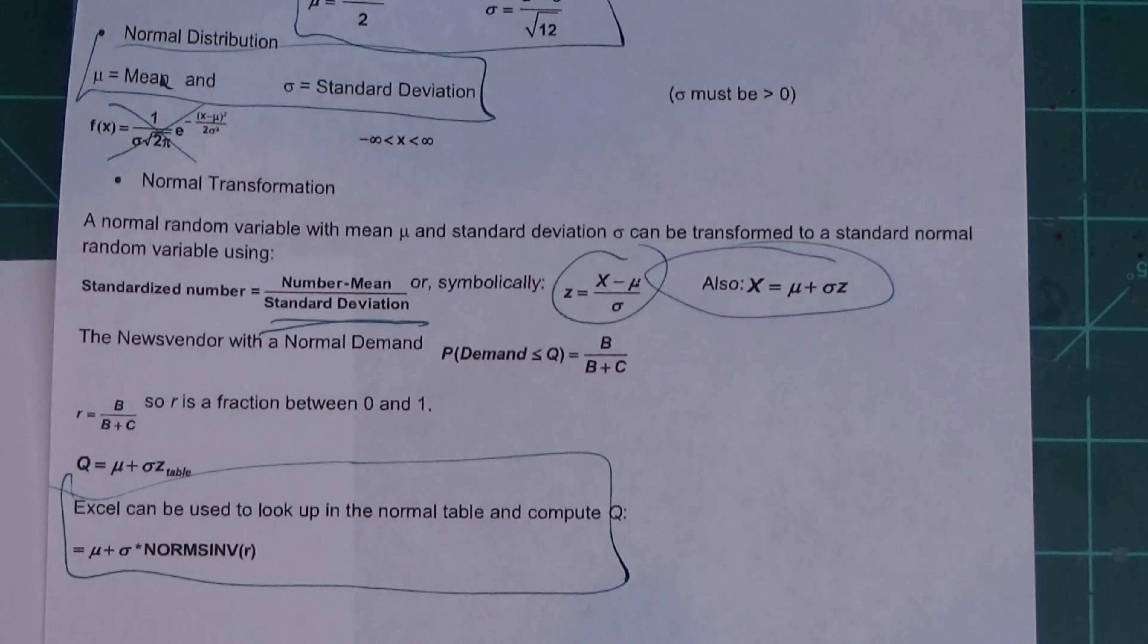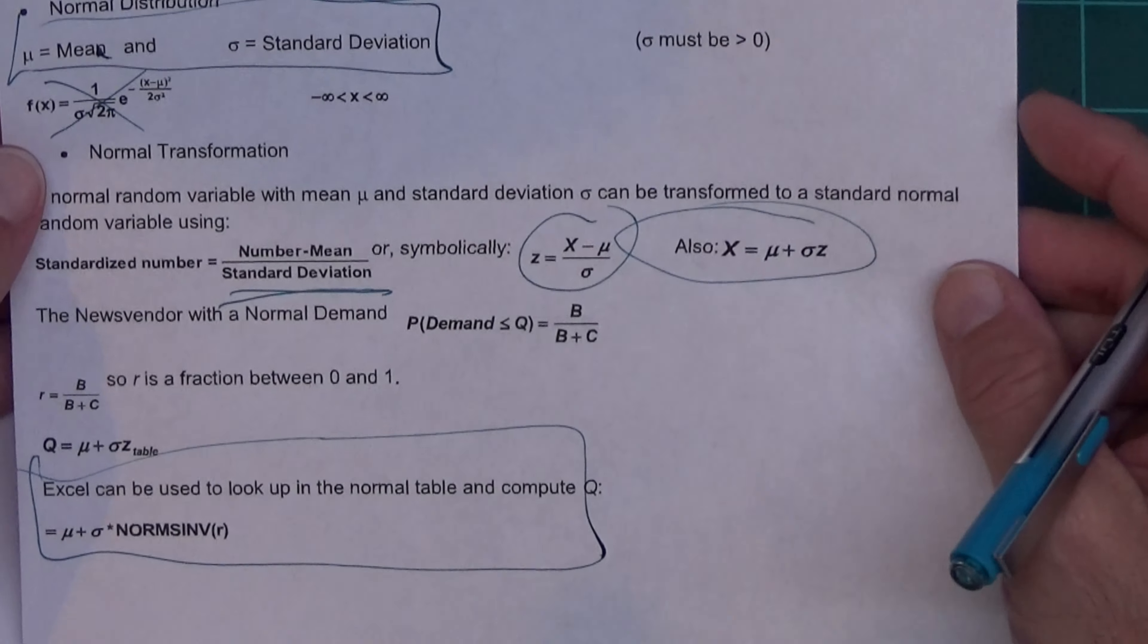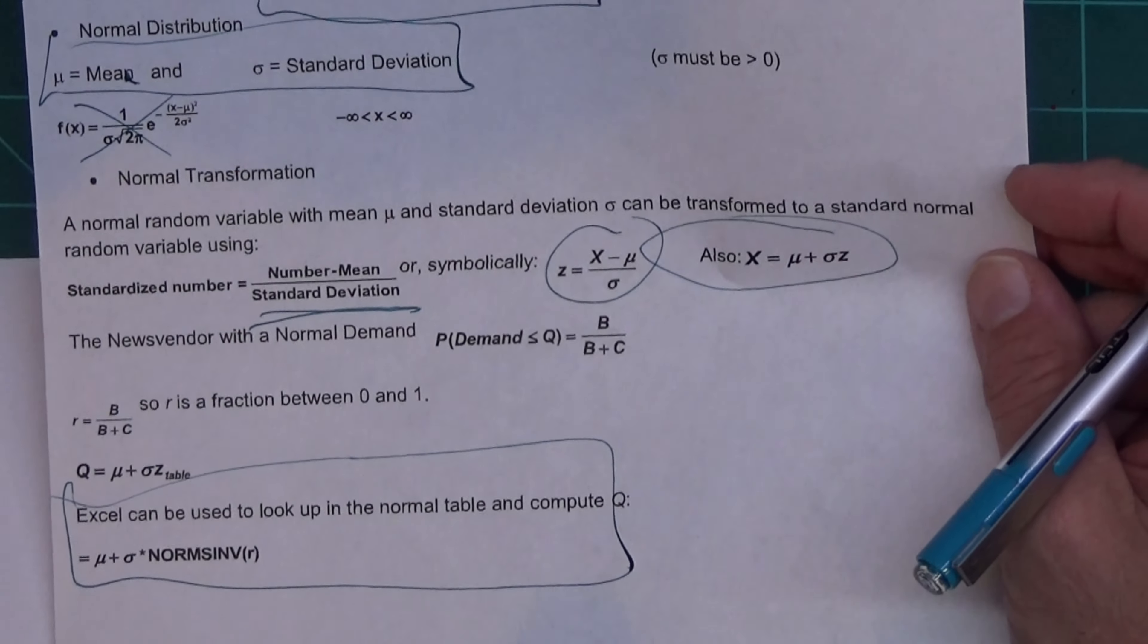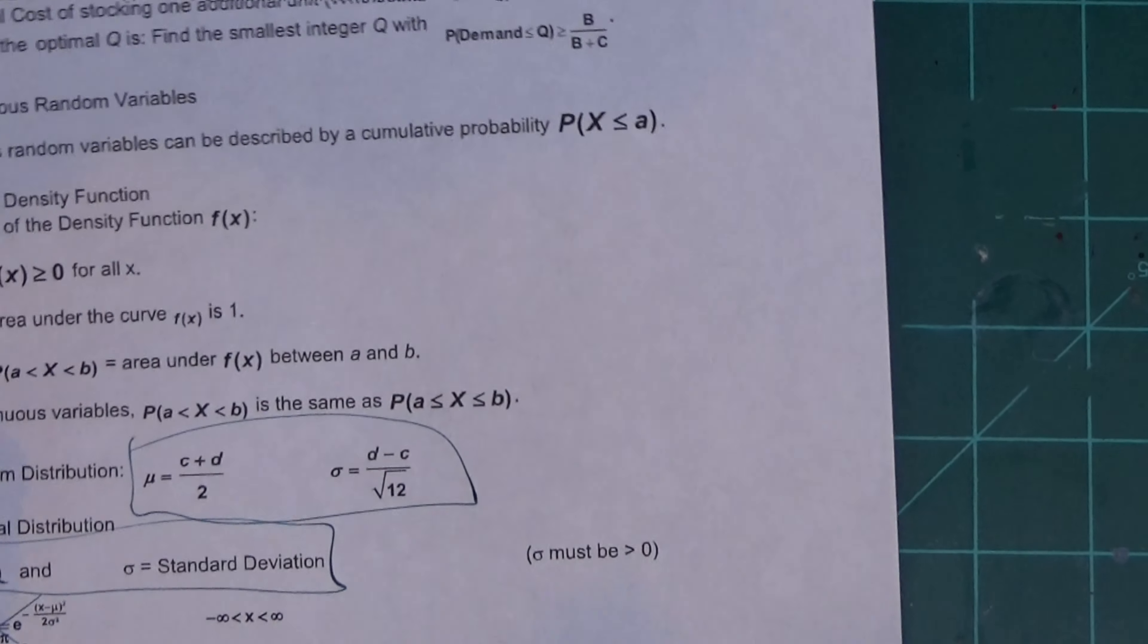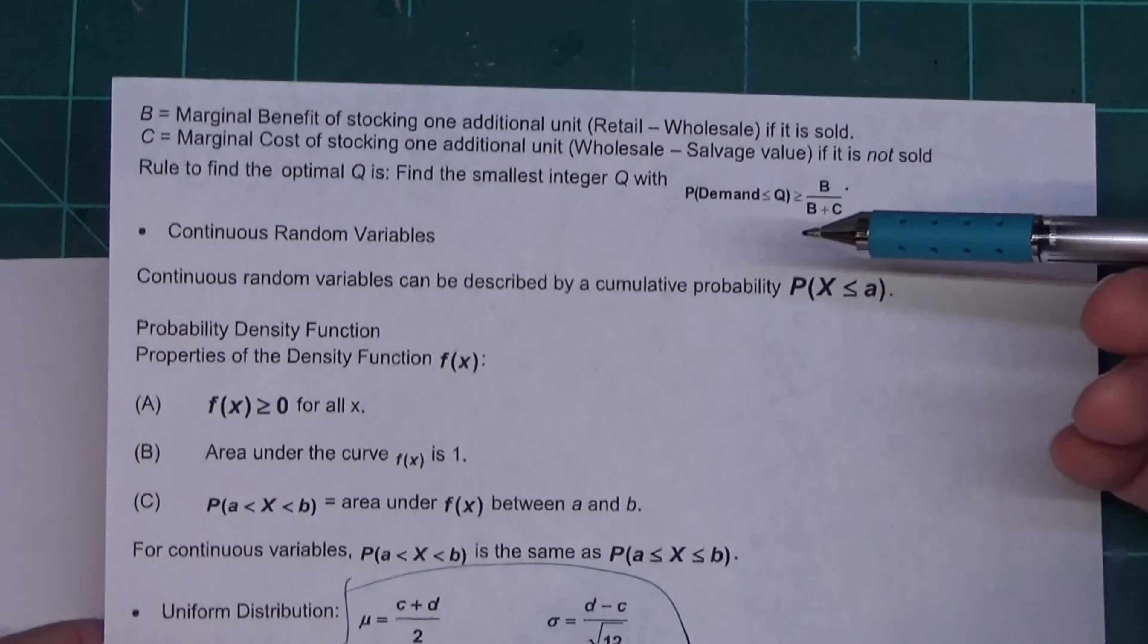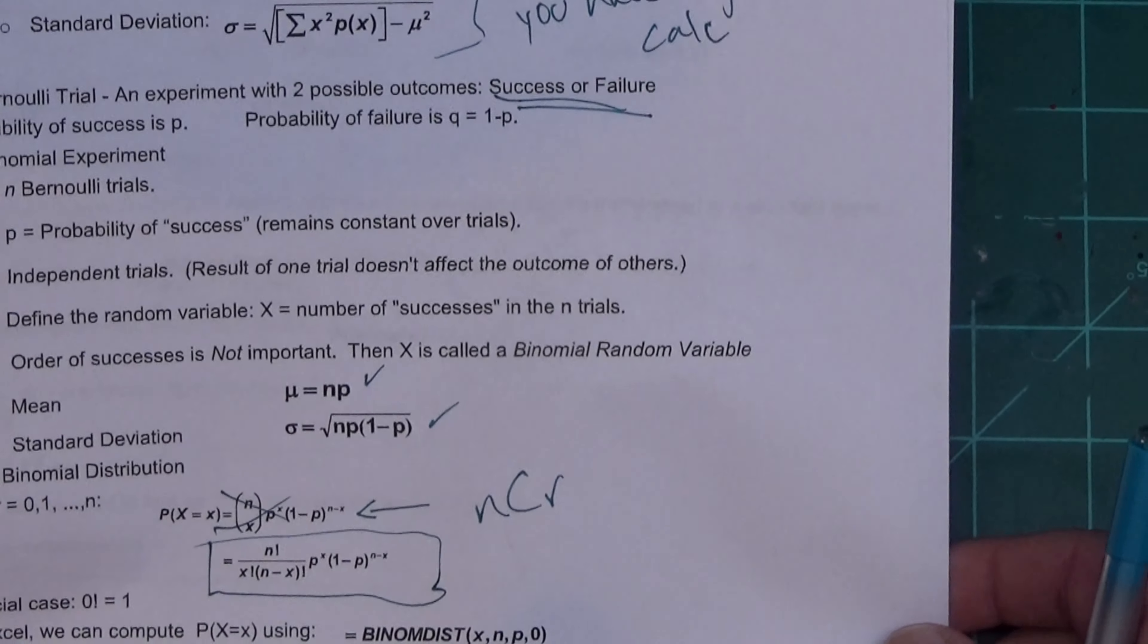So that's what's going on organization-wise. She could have organized this a little better. She could have put the news vendor problem all together in one spot instead of splitting it. What she's trying to say is up here it's discrete, down at the top it's discrete, down at the bottom it's continuous. But overall that isn't really an issue.